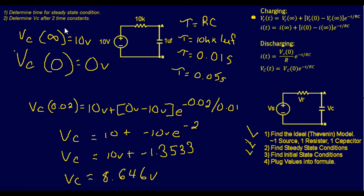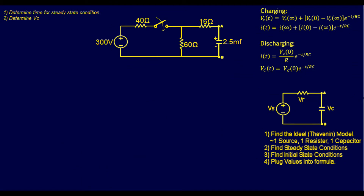That was a relatively easy problem. We'll now step it up to a more likely scenario for what you might see on a test. This next problem is a little more difficult — let's solve it. Step one: find the ideal Thevenin model. This circuit does not have one source and one resistor already, but it does have one capacitor. We'll use the Thevenin theorem steps from an earlier video to find the ideal model.